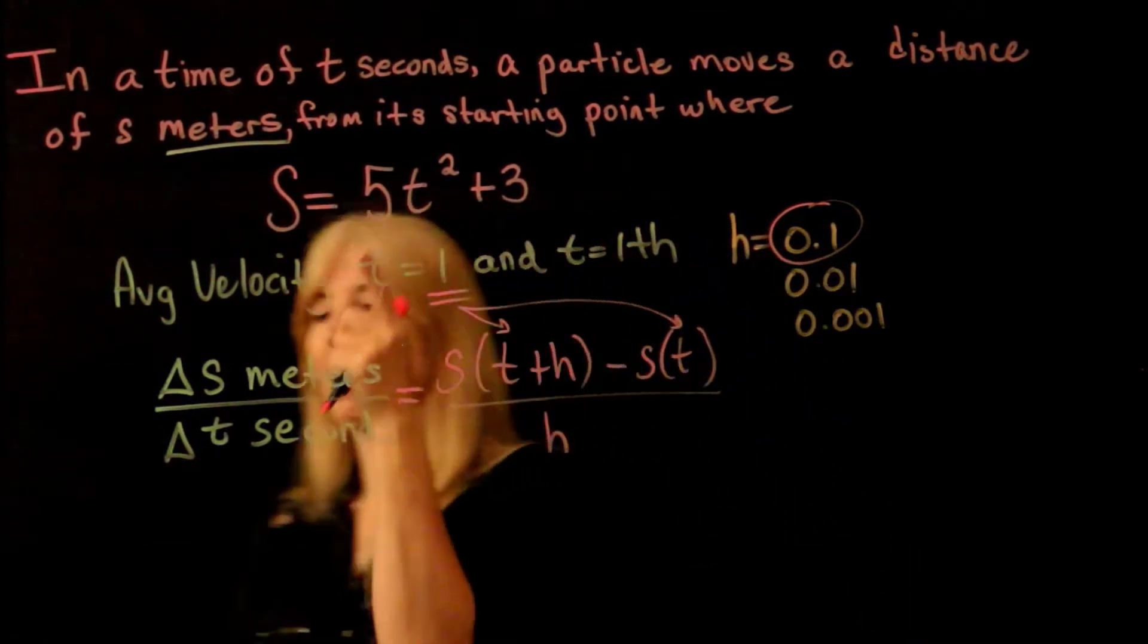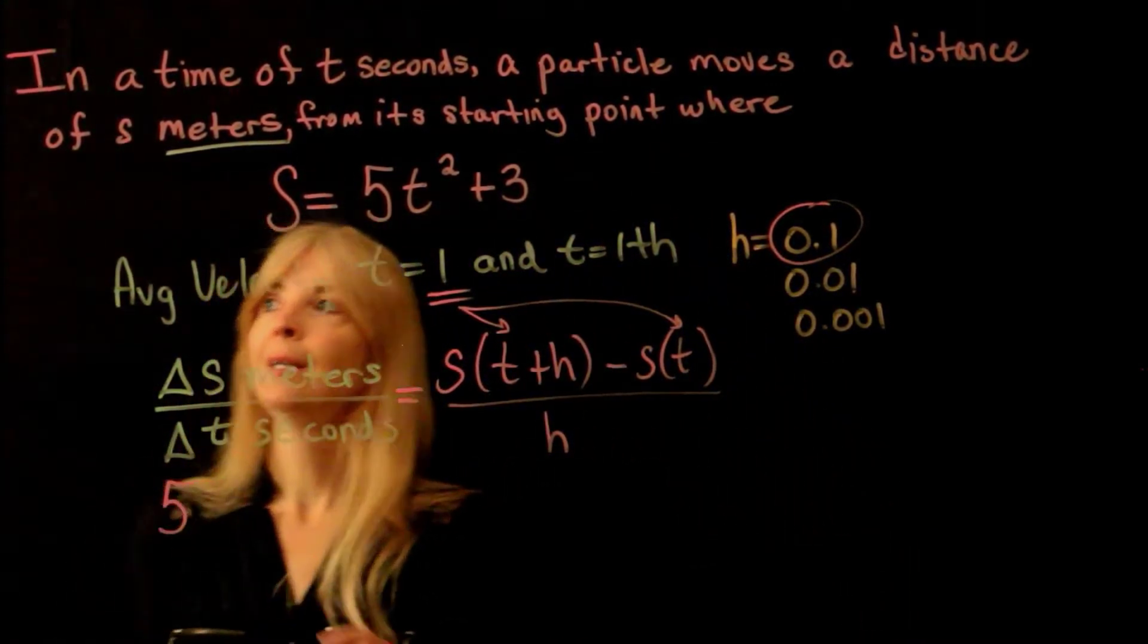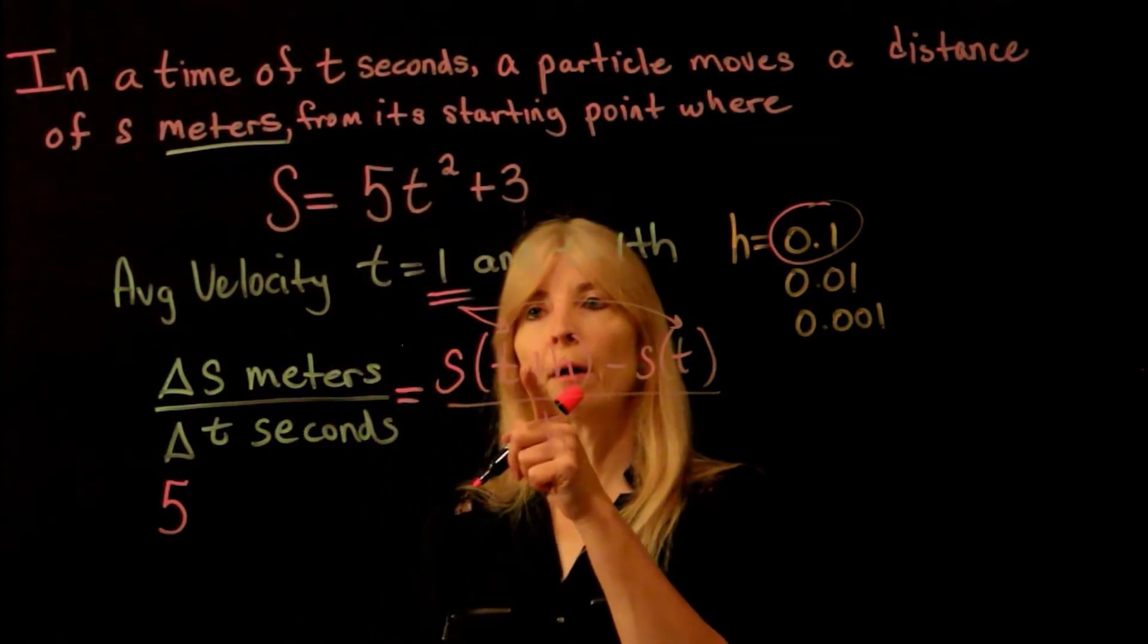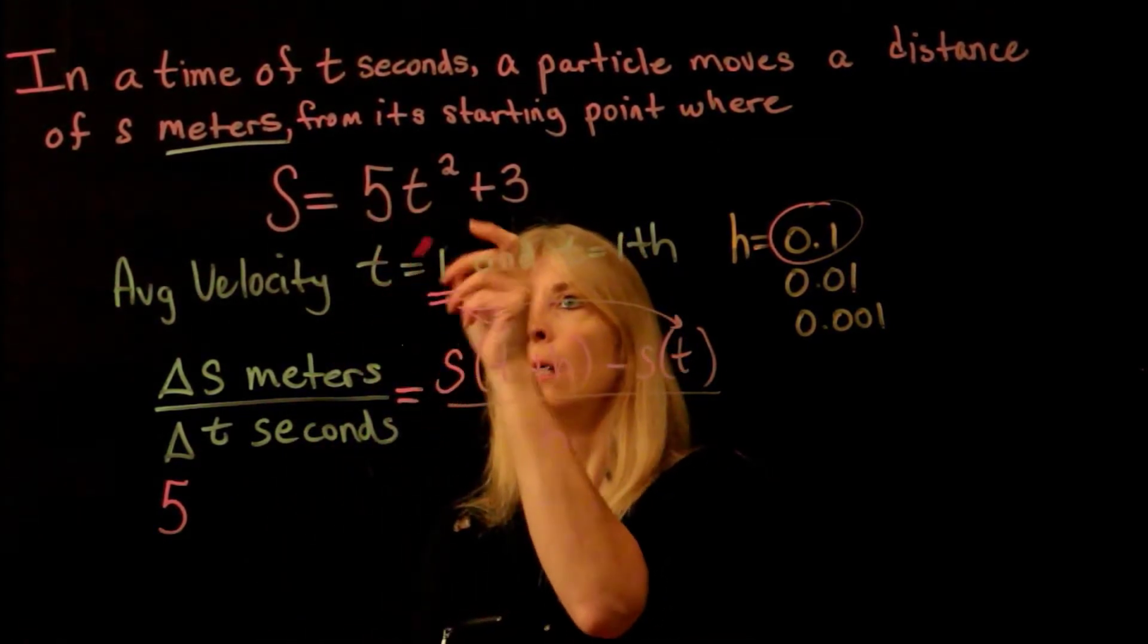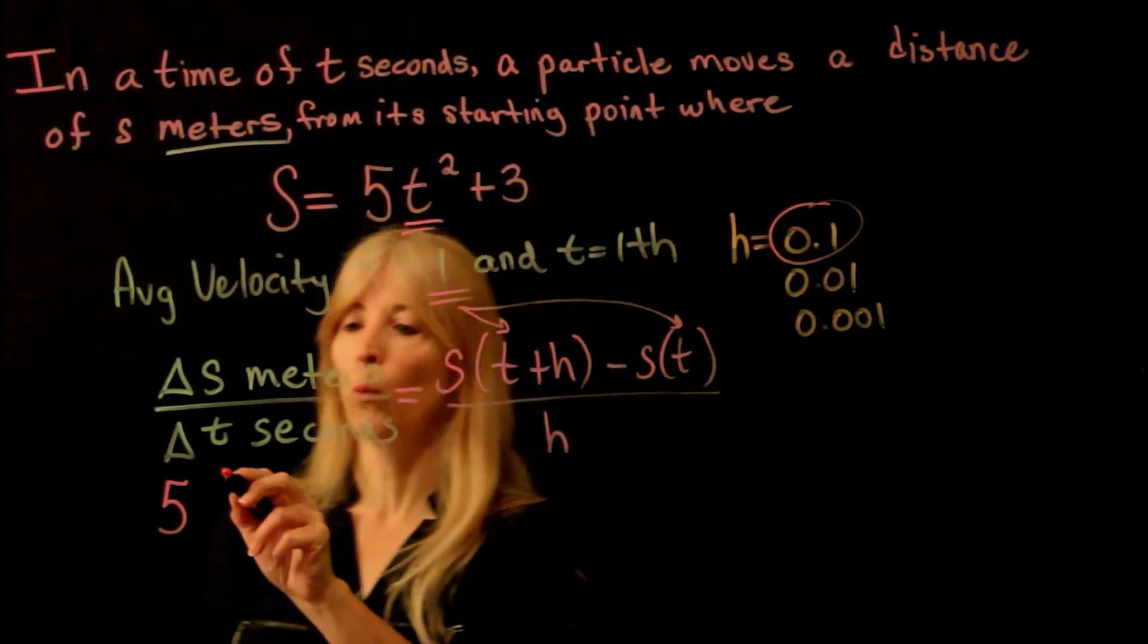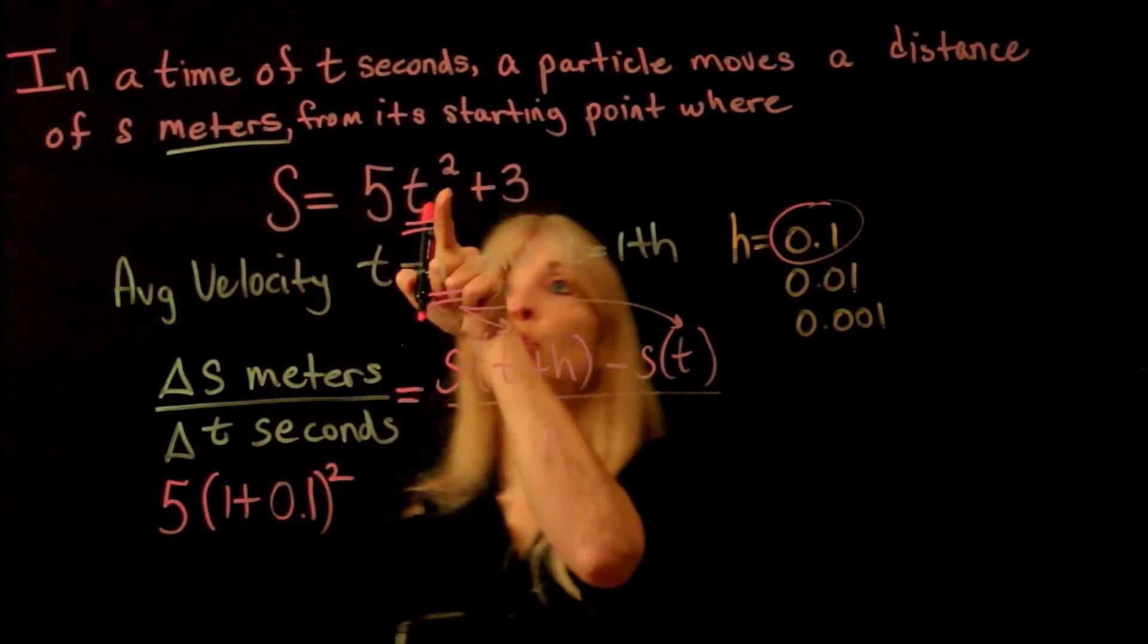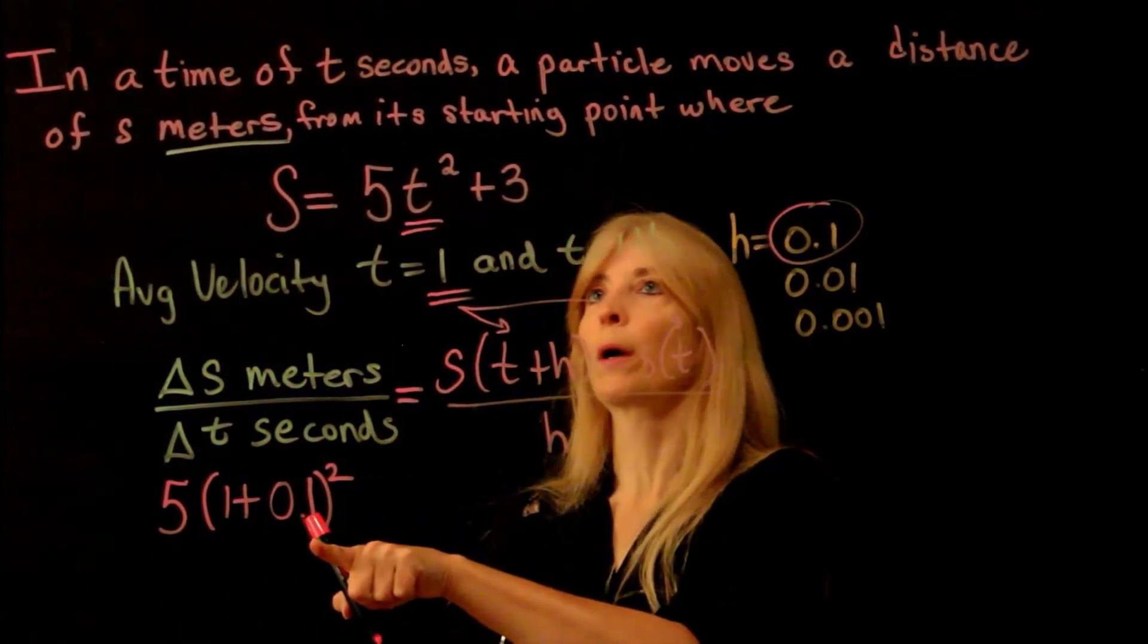So that says take my formula here, which is 5t. Where I see t, I'm going to plug in a 1 plus 0.1, 1 plus 0.1 squared, so that's t squared,